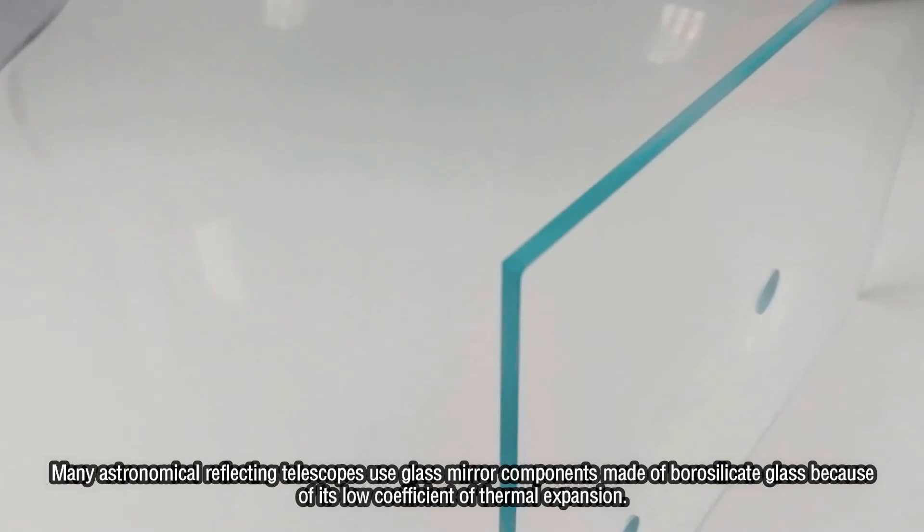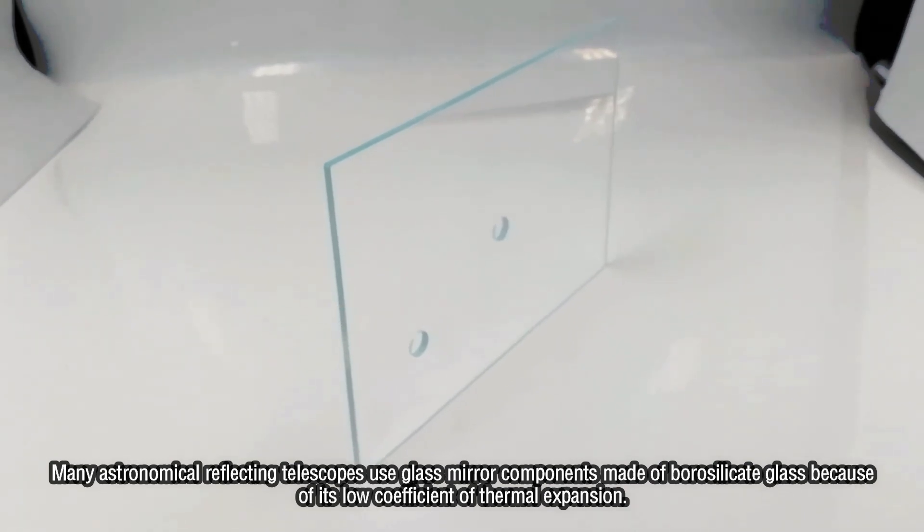Many astronomical reflecting telescopes use glass mirror components made of borosilicate glass because of its low coefficient of thermal expansion.